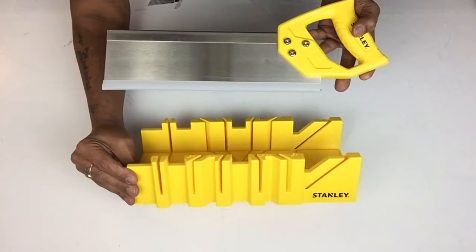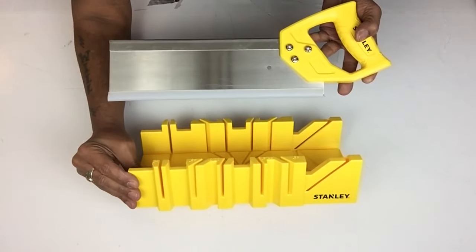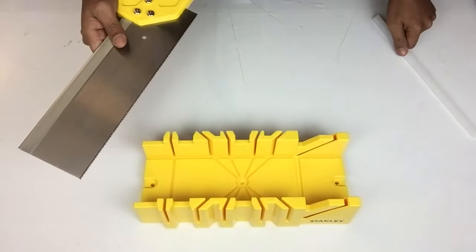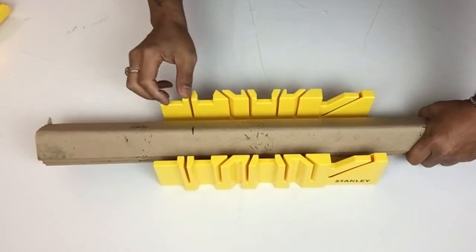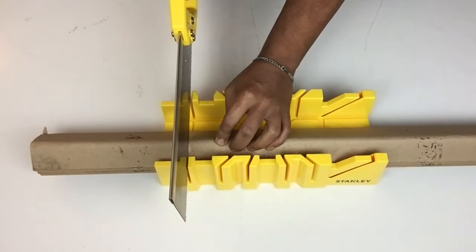Next I'll be using this hand saw that comes with a cutting guide and I'll be using this to cut my borders. Next I'll take all my borders and I'll place them and then I'll start cutting them for an even cut.